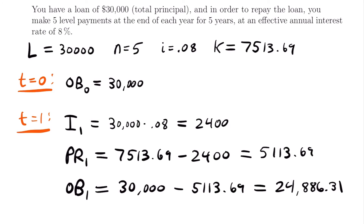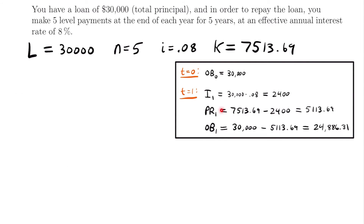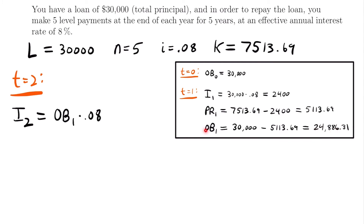Now let's look at time equals two. The interest at time two, I sub 2, equals the outstanding balance at the end of year one times the interest rate — so $24,886.31 times 0.08. That gives us the interest accumulated in year two: $1,990.90. Then the principal paid at time two equals the payment K minus I sub 2.